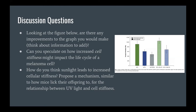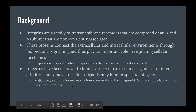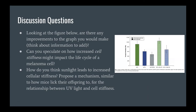The next discussion question: how might cell stiffness impact the life cycle of a melanoma cell? It was recalled from the presentation that alpha v beta 3 integrin promotes melanoma tumor survival, suggesting increased strain helps cells survive. The class was invited to propose mechanisms for how increased stiffness might help a cell survive.